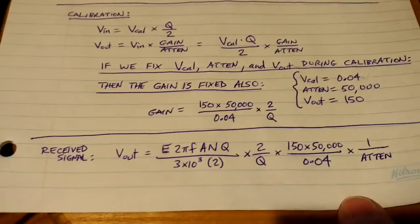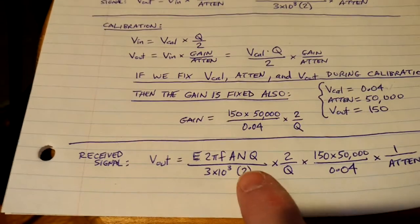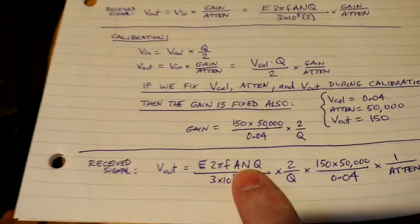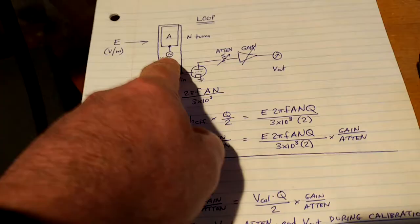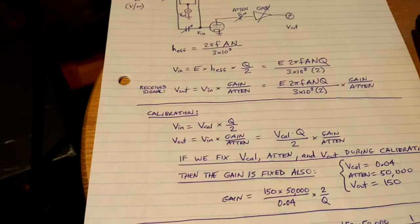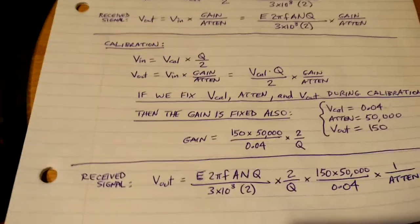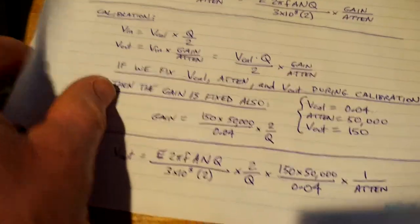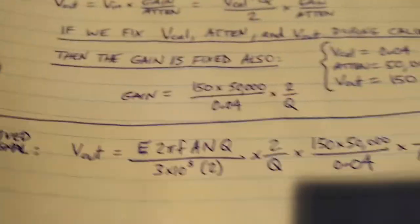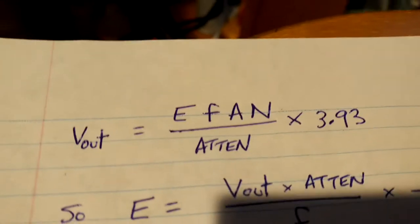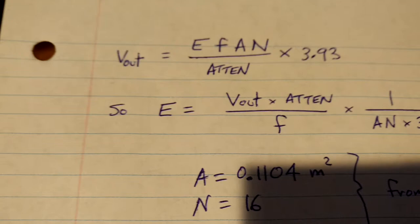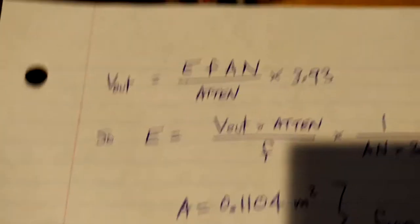So, what do you see here? The Qs cancel out, and that makes sense, because the Q is part of the gain from the voltage to the output, and since the calibration signal and the incoming signal go through the same Q and the same gain, they cancel out. So what you have now, if we evaluate these numerals, it simplifies to V out is E F A N over the attenuator value times 3.93.